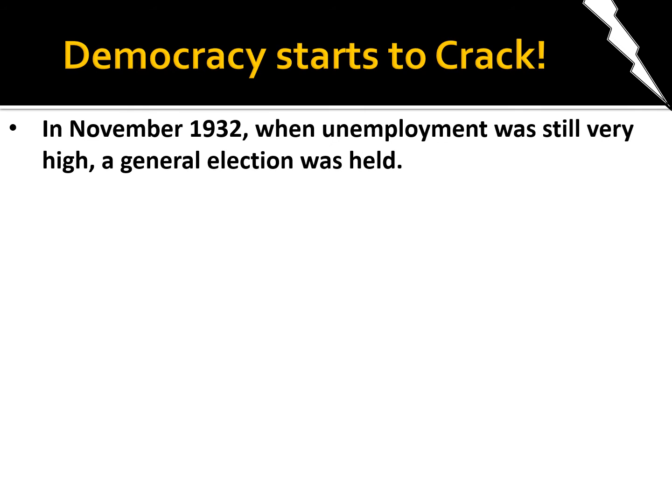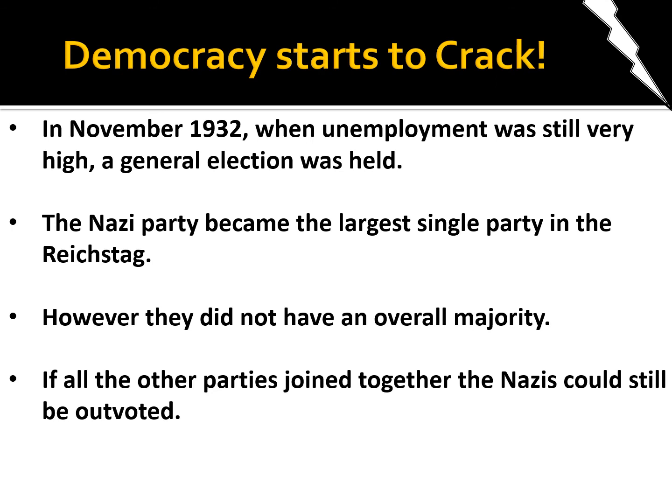In November 1932, when unemployment was still very high, a general election was held and the Nazi party became the largest single party in the Reichstag. However, they still did not have an overall majority at this point in time. If the other parties joined together they would still be outvoted, so this meant the Nazis could still be blocked if they tried to form a government.